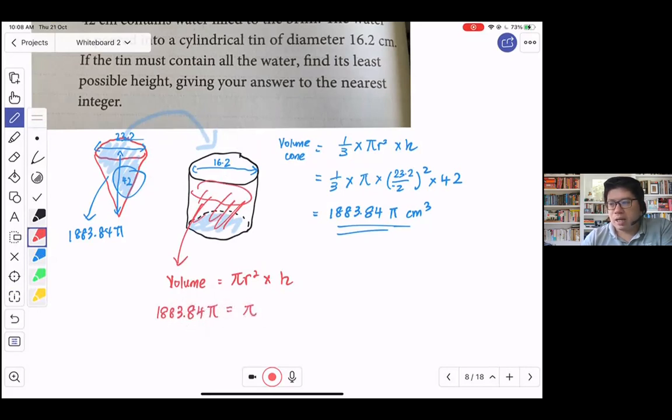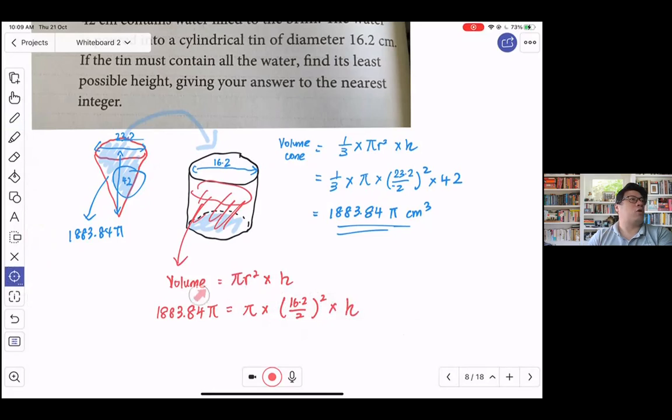Which will tell you that the volume of the water inside the tin now is going to be 1883.84π. This will be equal to π multiplied by the radius. So the radius of the tin will be 16.2 divided by 2, because this is a diameter, 16.2 divided by 2 squared, multiplied by the height.